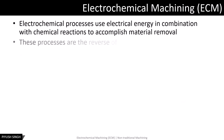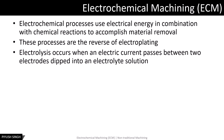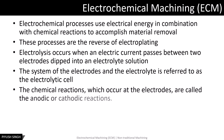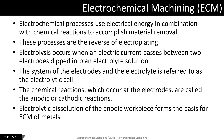A combination of electricity and chemical reactions is used to perform the reverse of electroplating. Electrolysis occurs on passing current between two electrodes dipped in an electrolyte solution. The electrolyte and the electrode together form an electrolytic cell. The reactions at the anode and the cathode are referred to as anodic and cathodic reactions respectively. During ECM, anodic dissolution takes place.